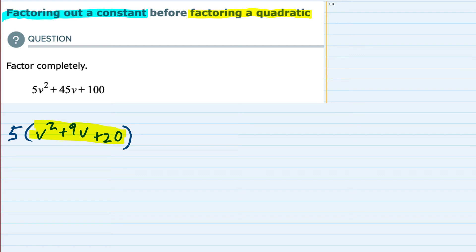I want to make sure that I remember that that 5 is still outside. So I'm going to go ahead and put it back out there and leave it out there. But I'm going to factor the v² + 9v + 20 into two terms being multiplied.